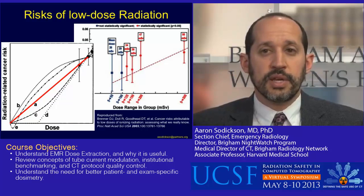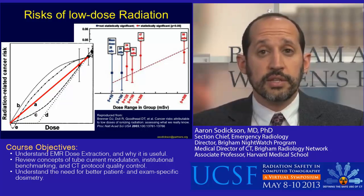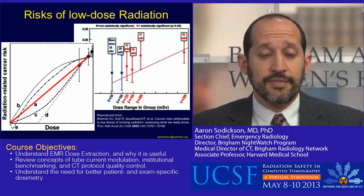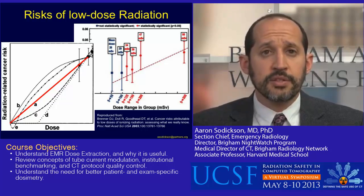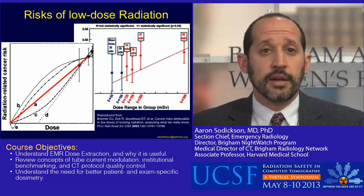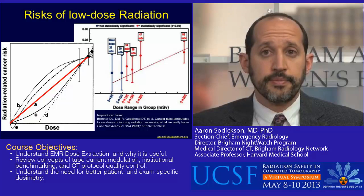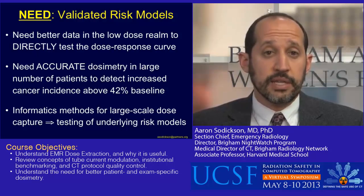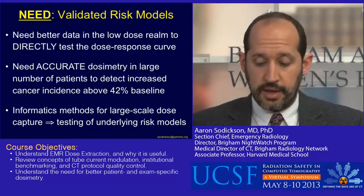What do we know about low-dose radiation risks? A lot of this comes from the survivors of the atomic bombs. The red data here shows that for certain dose ranges, we have statistically significant increases in risk of cancer development in patients who received doses above a certain amount. But as we get down to the lower-dose realm, where we're doing most of our diagnostic imaging in CT, there's a lot of uncertainty about what this dose-response curve looks like, and as a result there have been many different proposed models. The most commonly used assumption is the linear no-threshold model in red, where we assume that if we double the radiation dose, we double the risk of developing a subsequent cancer. We clearly need better validated risk models, and one way to do this would be to capture better data in this low-dose realm to directly test our dose-response curves and see what fits reality.